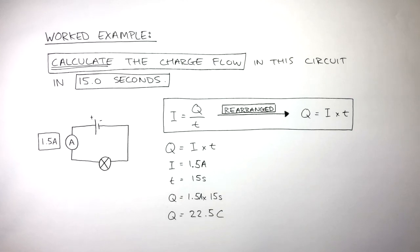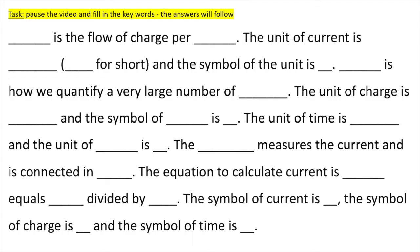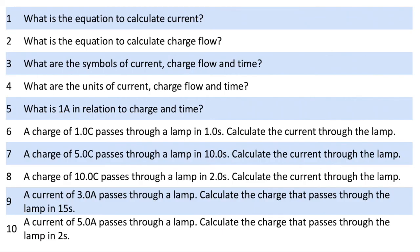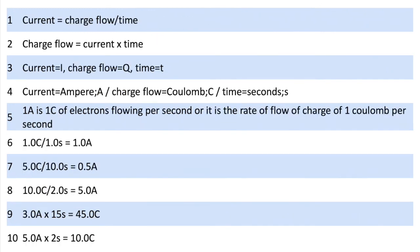The final answer is Q equals 22.5 Coulombs. This means 22.5 Coulombs has flowed through this circuit in 15 seconds. Pause the video here to practice the key words. Press pause to answer the questions. The answers will follow. If stuck, just rewatch the video.